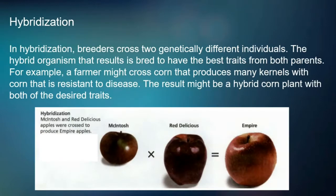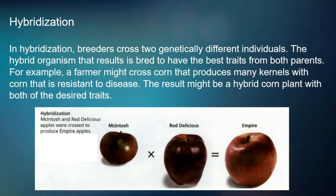Hybridization. In hybridization, breeders cross two genetically different individuals — and that's the difference from inbreeding, where they are similar. In this case, they have to be genetically different. The hybrid organism is bred to have the best traits from both parents. For example, a farmer might cross corn that produces many kernels with corn that is resistant to disease. The result might be a hybrid corn plant with both of the desired traits.